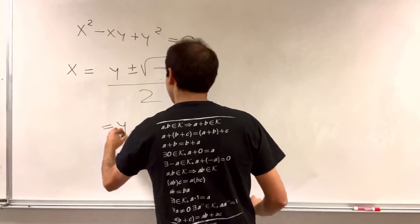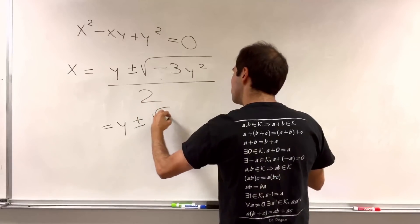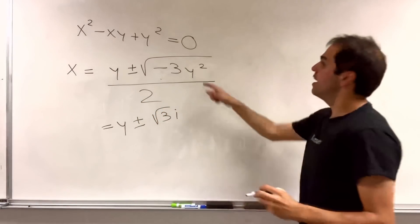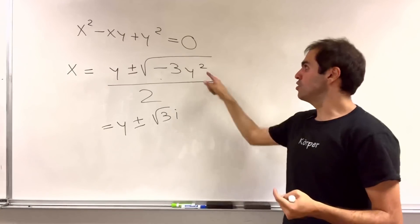So in particular, x is y plus or minus square root of minus 1, that's i, so square root of 3i, and square root of y squared, that's absolute value of y, but because of the plus minus, it doesn't really matter.